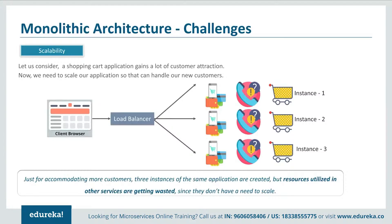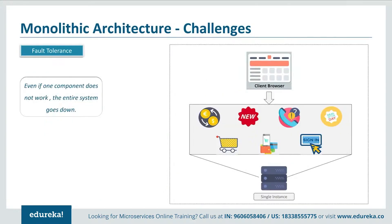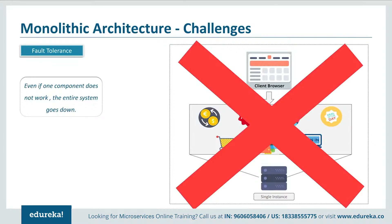The second challenge is scalability. Consider yourself as a developer — if you built an application on a monolithic architecture, how would you keep up with scalability? For example, our shopping cart application is built on a monolithic framework. Now consider three customers come onto the application. Just to accommodate these three new customers, three instances of the same application have to be created. Also, resources get wasted for services which do not need to be scaled. The third challenge is fault tolerance. Even if one feature of the application doesn't work, the entire system goes down. This not only creates a problem for users but also for developers, as they have to rebuild it again.